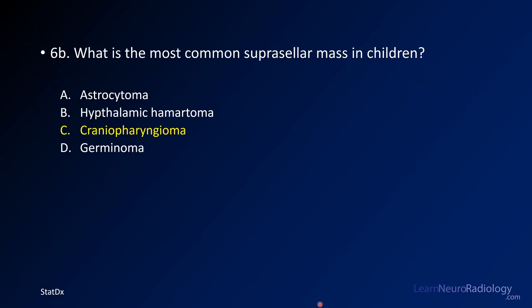The most common suprasellar mass in children is a craniopharyngioma. These are typically solid and cystic masses in a similar region, tending to be a little closer to the sella. They are less homogeneous than these hamartomas — the hamartoma in this case was very homogeneous and non-enhancing. Craniopharyngiomas will definitely have enhancement and be solid and cystic.